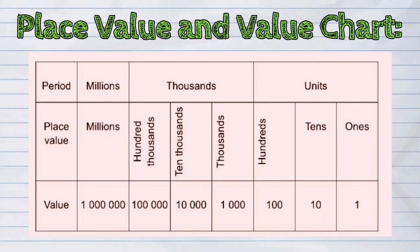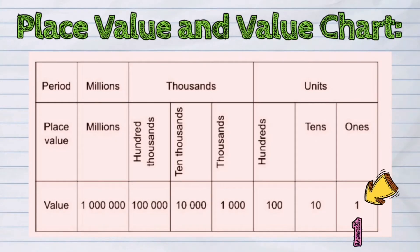Ones is a one digit number, tens is two, hundreds is three, thousands four, ten thousands five, hundred thousands is six, and millions is a seven digit number.